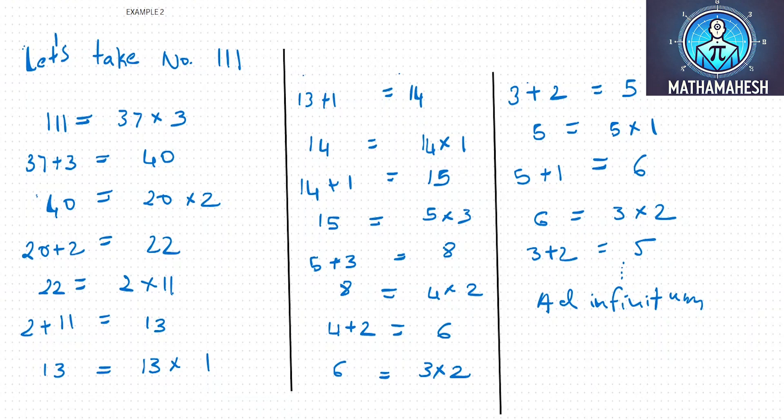13 being a prime number, 13 can be factored as 13 into 1. Now 13 plus 1 is 14. 14 can be factored as 14 into 1. 14 plus 1 is 15. 15 can be factored as 5 into 3. 5 plus 3 is equal to 8.